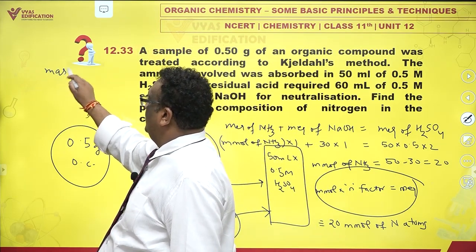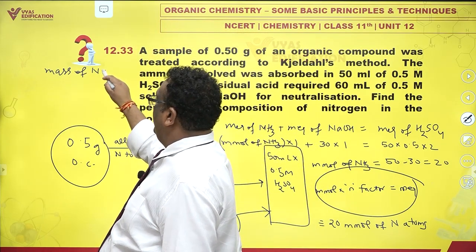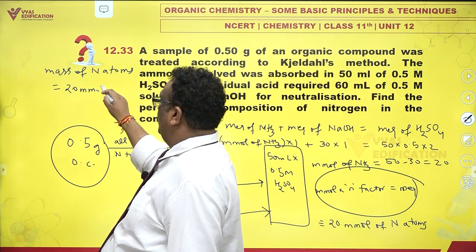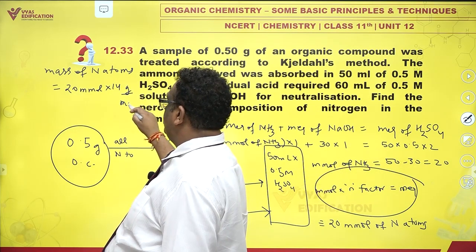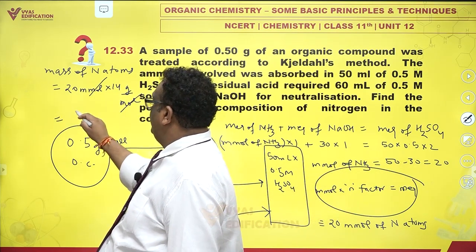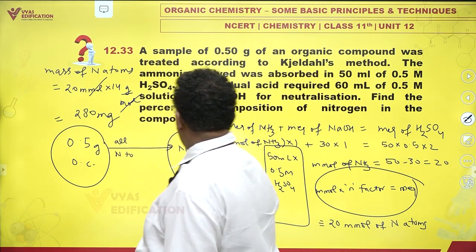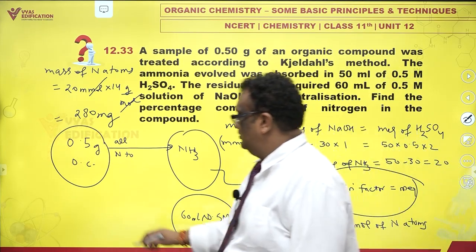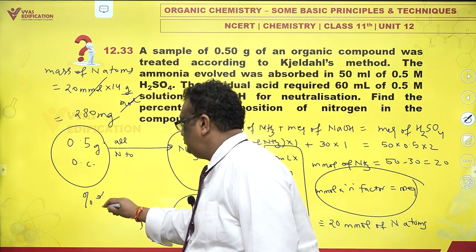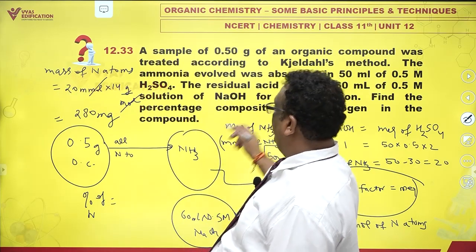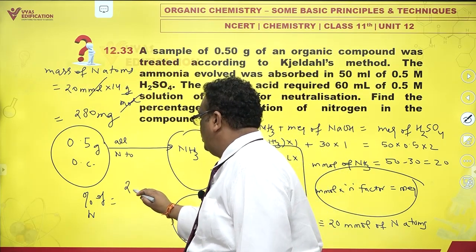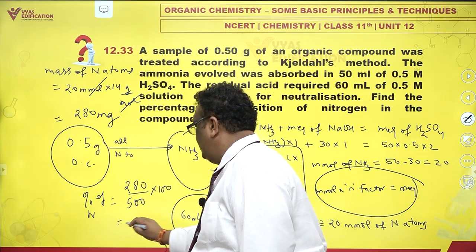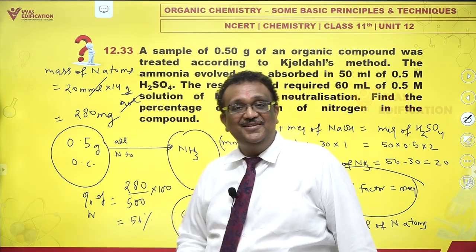Mass of nitrogen atoms is 20 millimoles into 14 grams per mole, which is 280 milligrams. We have 0.5 grams, that is 500 milligrams. So percentage of nitrogen is 280 divided by 500 into 100, which is 56%.